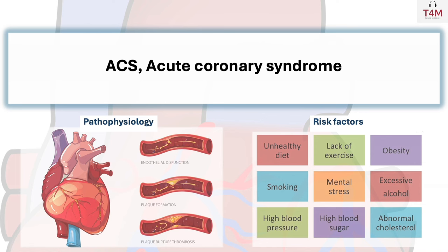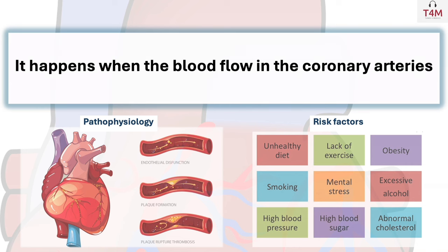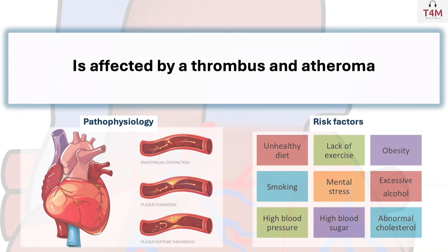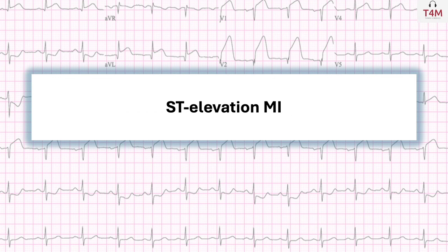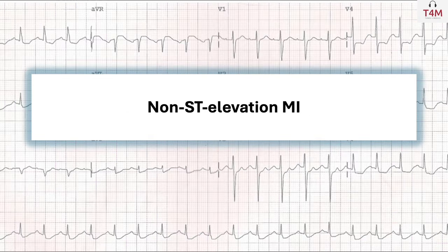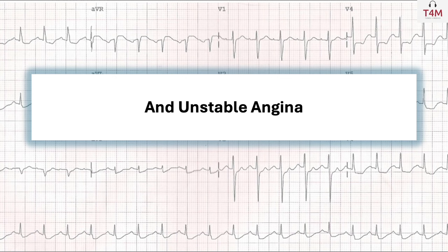ACS — Acute Coronary Syndrome — happens when blood flow in the coronary arteries is affected by a thrombus and atheroma. It covers three presentations: ST-elevation MI (STEMI), Non-ST-elevation MI (NSTEMI), and unstable angina.